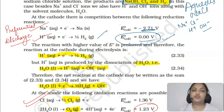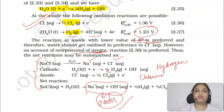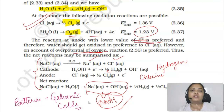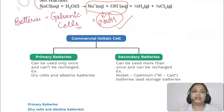Now we will talk about batteries. The batteries we use in daily life are actually galvanic cells — electrochemical cells where the energy of a redox reaction is converted to electrical energy. They are of two types: primary and secondary batteries.